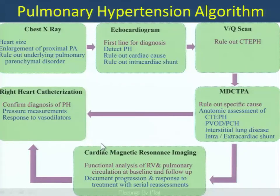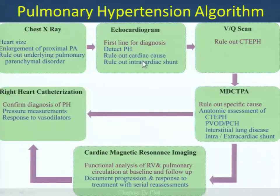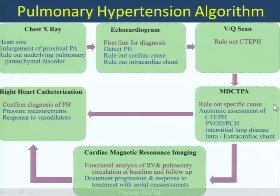Here is a diagnostic algorithm putting this all in context. We're not going to be the first to make the diagnosis — we'll see a chest X-ray and rule out underlying pulmonary parenchymal disease, though that's not always reliable. Echocardiogram is the first line for diagnosis of pulmonary hypertension, and can rule out cardiac diseases and intracardiac shunts. A V/Q scan can rule out thromboembolic disease. Multi-detector CT helps rule out specific causes: pulmonary emboli anatomically, pulmonary veno-occlusive disease, pulmonary capillary hemangiomatosis, interstitial lung disease, and possibly undiagnosed shunts.